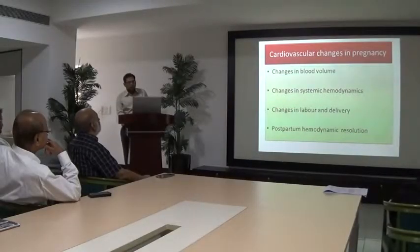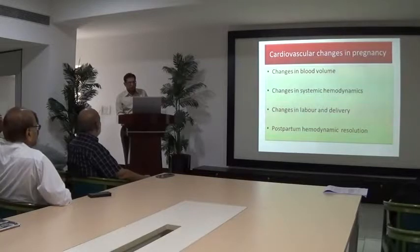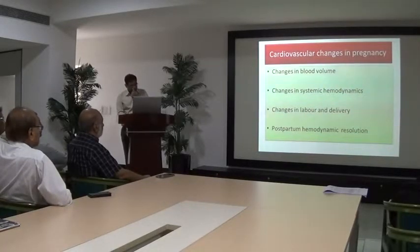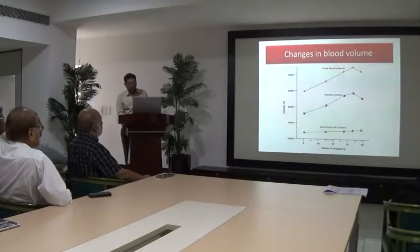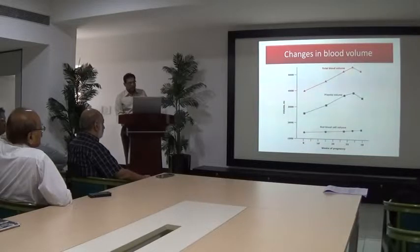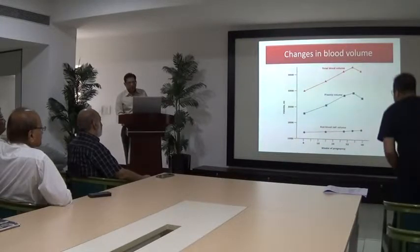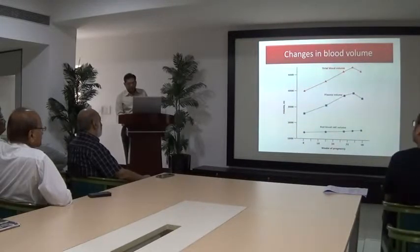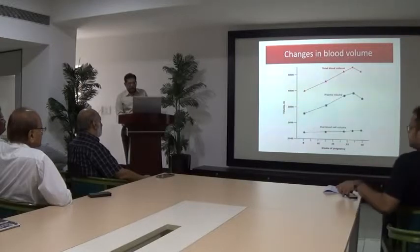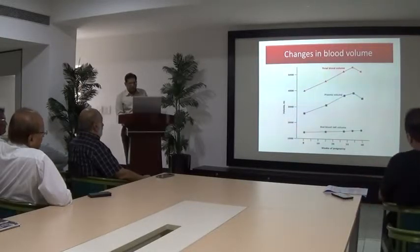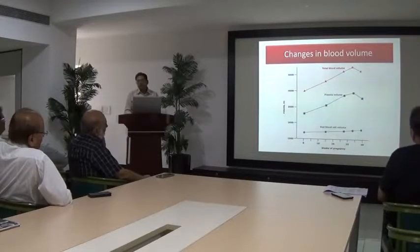What changes occur in pregnancy? There is an increase in blood volume, with changes during the first and third trimesters and postpartum. Looking at the chart showing changes in blood volume, as pregnancy progresses the total blood volume increases up to 36 weeks and then decreases. Similarly, plasma volume and red blood cell volume change, but RBC volume does not increase in proportion to the total blood volume.